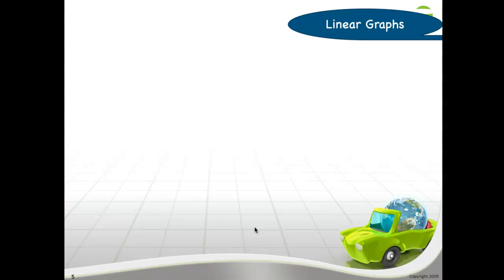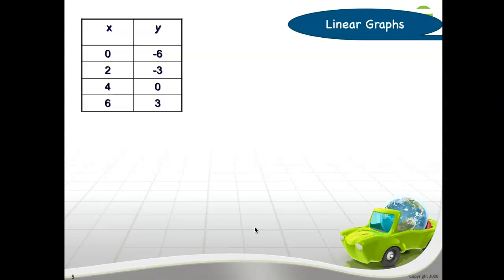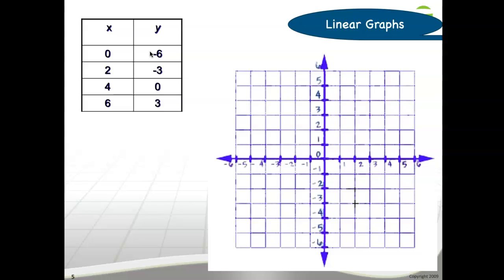Let's have another example. Now I'm going to focus more on how to graph to make a different representation. From the table we go to the equation, and now we're moving on to the graph. If you're given an input-output table, remember that each pair of X and Y is actually a point in your graph — the X coordinate and the Y coordinate are pairs. So there are four pairs, meaning you can plot four points.